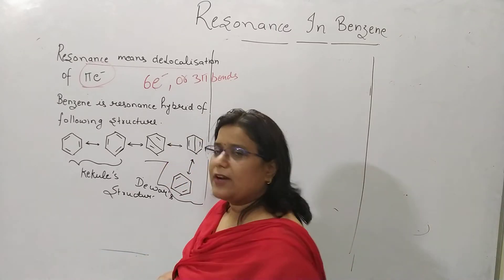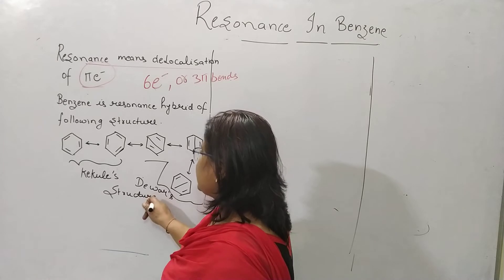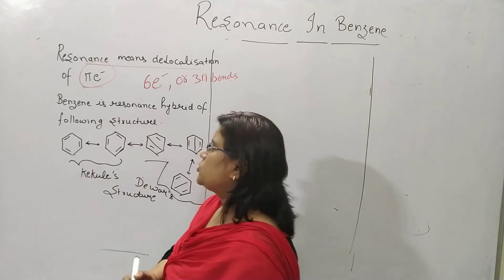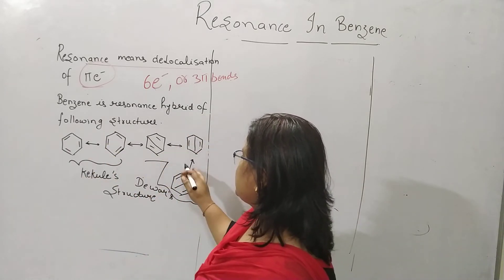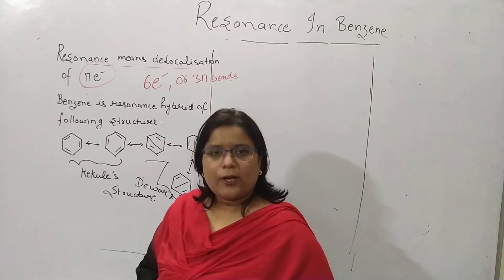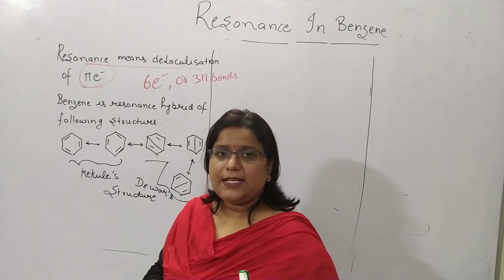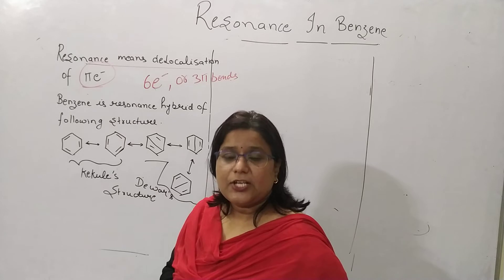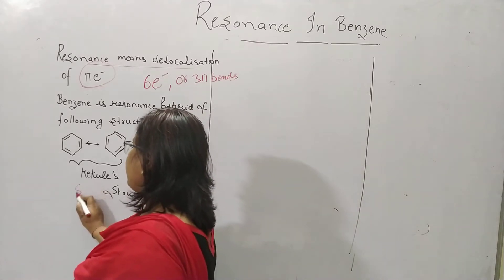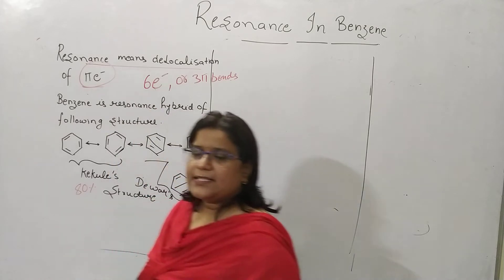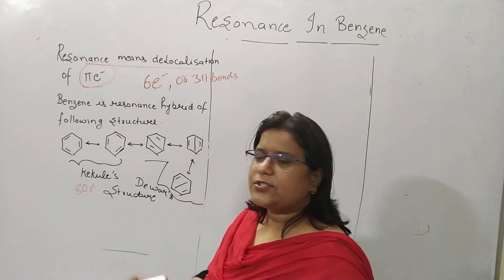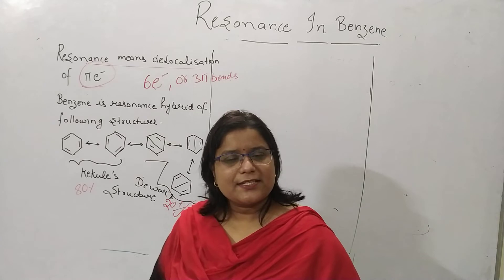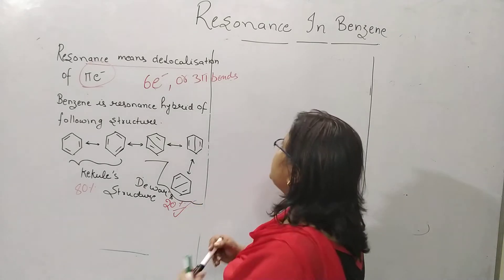The Kekulé structure has double bonds arranged in alternating positions in the ring. In the Dewar structure, the double bonds are represented differently. The Kekulé structure describes 80 percent of the properties of benzene, so its contribution is 80 percent. The Dewar structure contributes only 10 to 20 percent of the chemical properties.